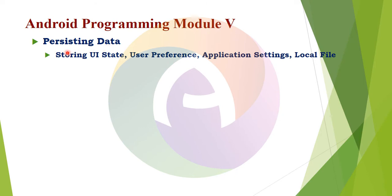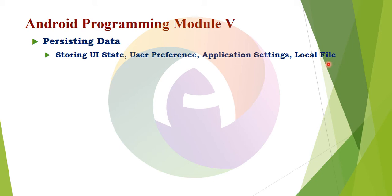The first topic is Persisting Data — how is data persisted in a database store? This includes Storing UI State, User Interface State, and User Preferences, where the database is saved. You can use Wi-Fi or GPS settings. Application Settings allow one application to save data. Local Files: the file manager is used to save files. These are the 4 types of persisting data content.